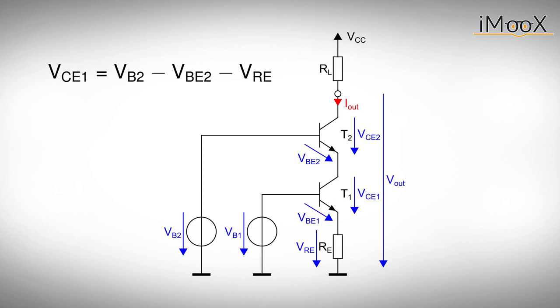The second base voltage VB2 is selected in such a way that the lower transistor T1 operates in the active regime, just like it did in our previous circuit. We already calculated the lower boundary for the voltage at the collector of T1. We add the base emitter voltage of T2 and get the minimum second base voltage VB2.